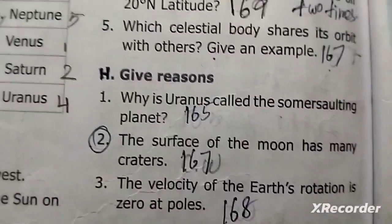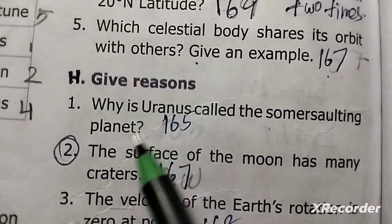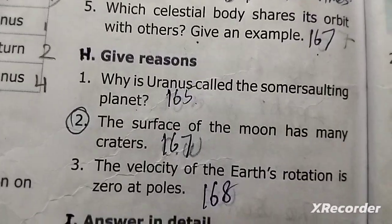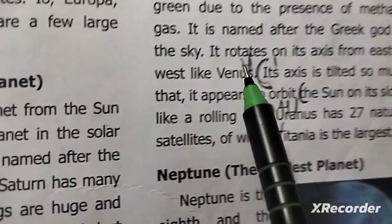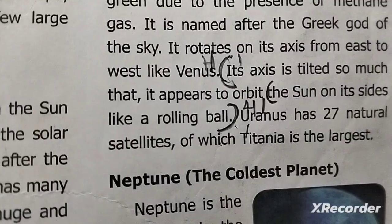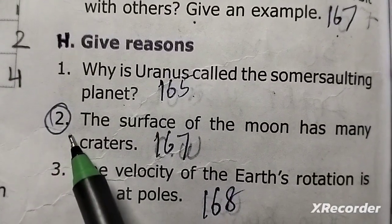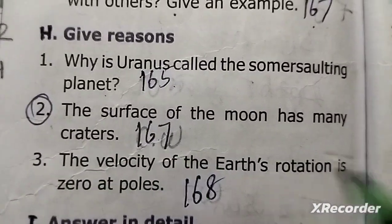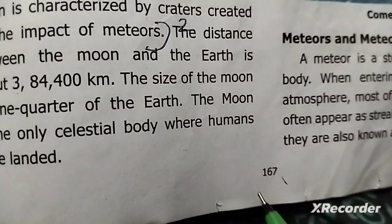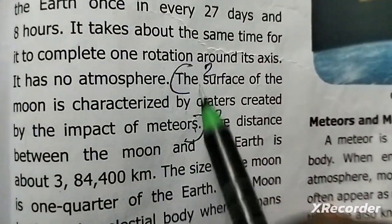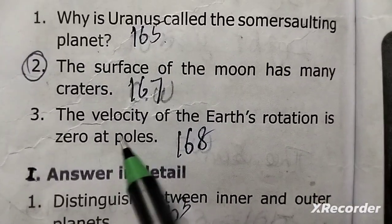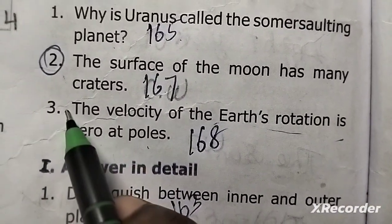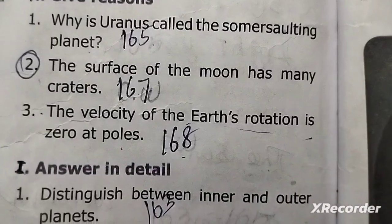Give reasons. First: why is Uranus called the somersaulting planet? Second: the surface of the moon has many craters. Third: the velocity of the Earth's rotation is zero at the poles.